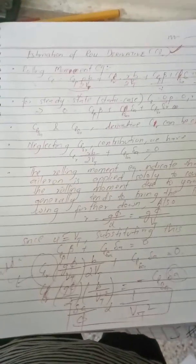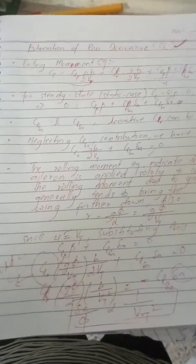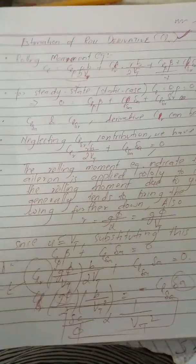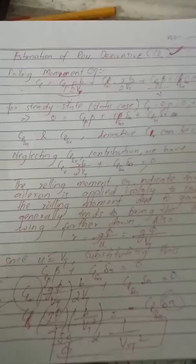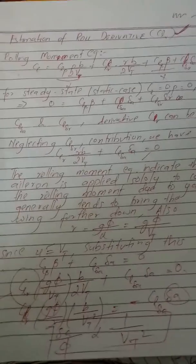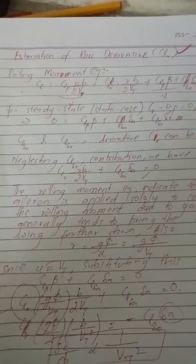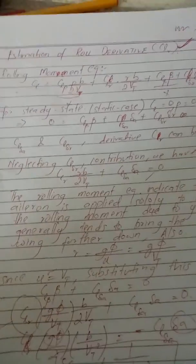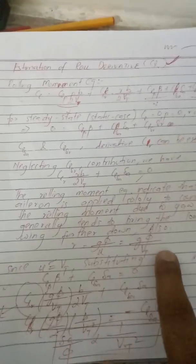In the last video we calculated the steady coordinated turn, and most of the analysis was due to the wing. As a continuation, we want the roll derivative as well — an estimation due to the aileron — which will help position the wing at a more suitable angle. The roll derivative provides further estimation for lateral and directional stability with respect to the wing and aileron on the back side of the wing.